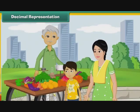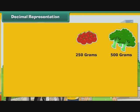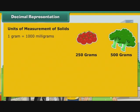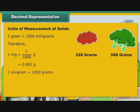Akshay accompanied his mother to the vegetable market. There, he saw his mother buy 250 grams and 500 grams of different vegetables. He wanted to express the quantities purchased as kilograms. Akshay must first understand the units used to measure quantities of solids. 1 gram is equal to 1000 milligrams. Therefore, 1 mg is equal to 1 by 1000 gram, that is equal to 0.001 gram. 1 kilogram is equal to 1000 grams. Therefore, 1 gram is equal to 1 by 1000 kg, that is equal to 0.001 kg.